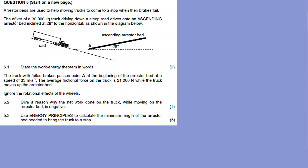Now, the truck has a mass of 30,000 kilograms. The driver of this 30,000 kilogram truck is driving down a steep road and drives onto an ascending arrestor bed inclined at 28 degrees to the horizontal, as shown in the diagram. Question 5.1: state the work-energy theorem in words.